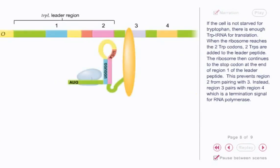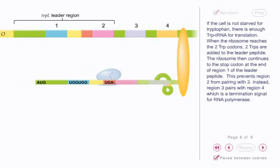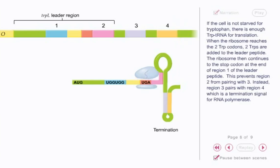If the cell is not starved for tryptophan, there is enough trp-tRNA for translation. When the ribosome reaches the two trp codons, two tryptophans are added to the leader peptide. The ribosome then continues to the stop codon at the end of region 1 of the leader peptide. This prevents region 2 from pairing with 3. Instead, region 3 pairs with region 4, which is a termination signal for RNA polymerase.